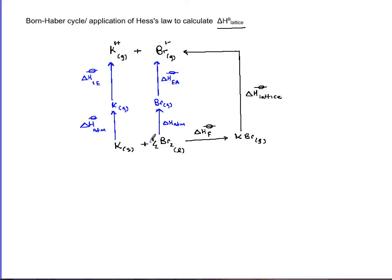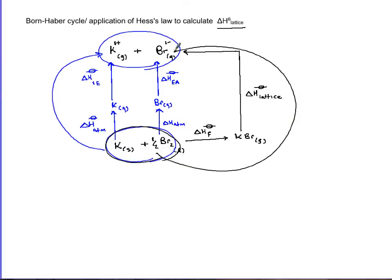Now according to Hess's law, following the blue arrows one, two, three, four, the sum of these blue arrows to fragments of ions should equal the other pathway you make to the same compounds.